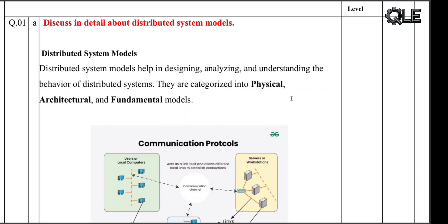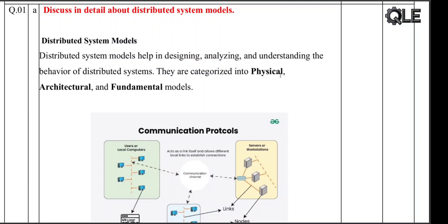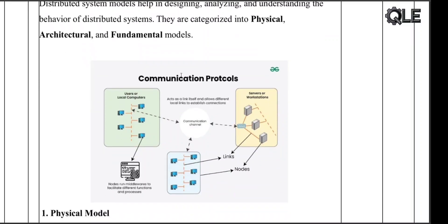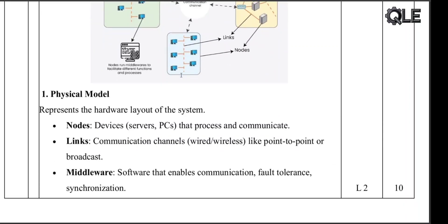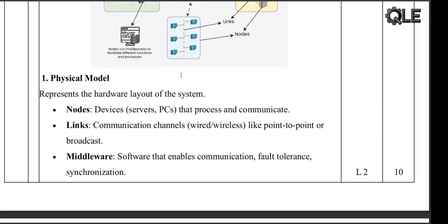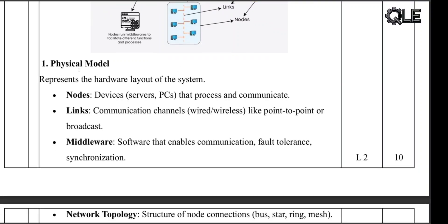Hey everyone, welcome back to the channel. In today's video we are going to break down a key topic in computer science: distributed system models. What exactly is a distributed system model? Distributed system models help us understand how distributed systems are designed, how they behave, and how we can make them more reliable and secure. There are three main types: physical model, architectural model, and fundamental model. Let's go through each of them one by one.